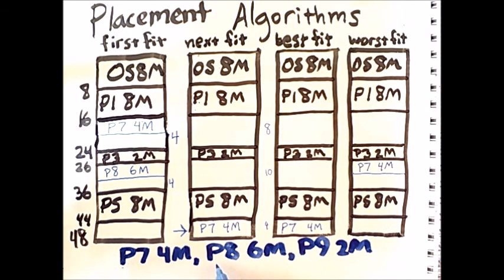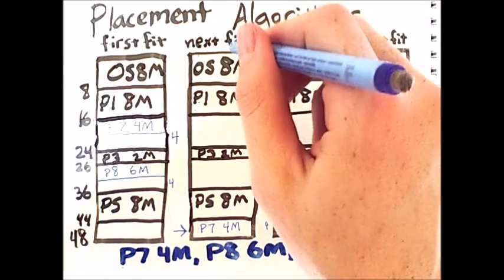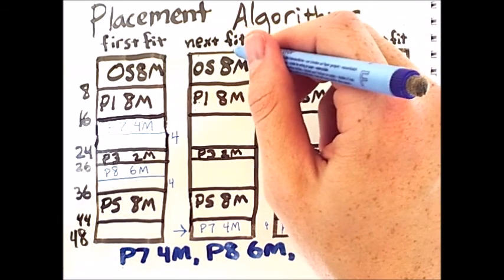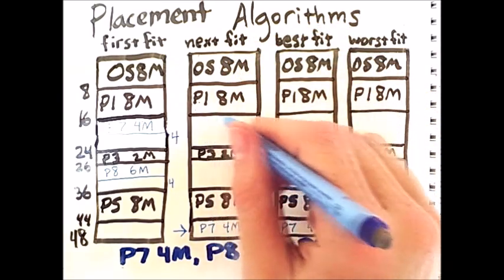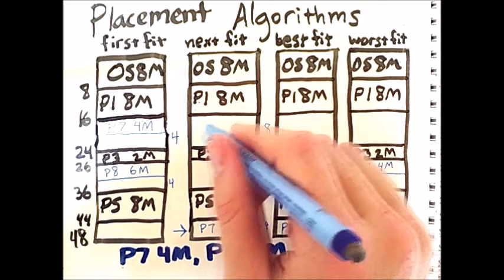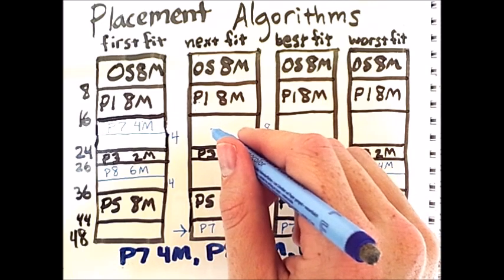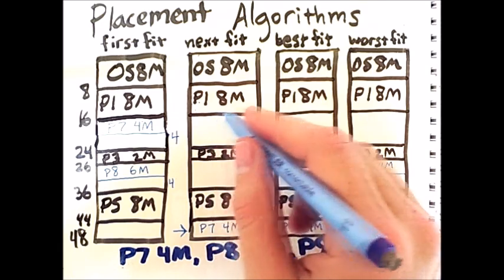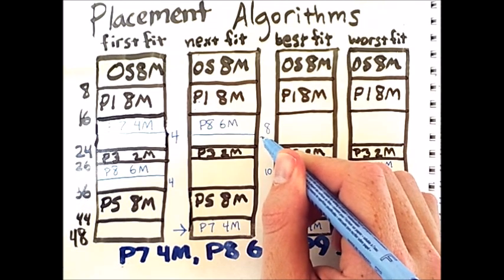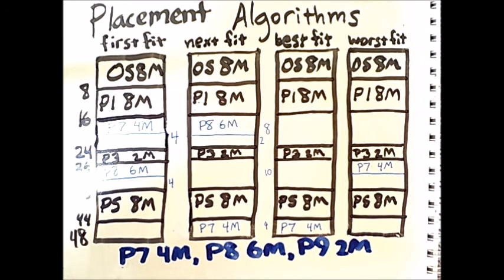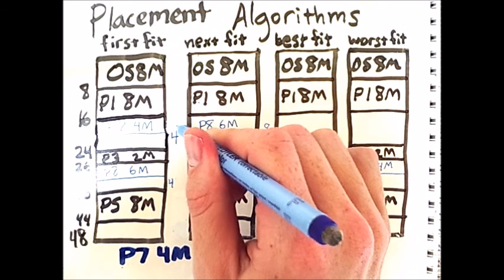When next fit tries to place process 8, it actually goes off the end of memory, but then loops back over to the beginning and resumes the search. Next fit is able to place process 8 here, because it did not previously fill this slot with any process. Hence, there's still plenty of room left for this 6 megabyte process. There are now 2 megabytes left. We also update next fit's awareness of where the last placement occurred.